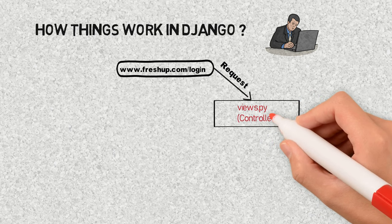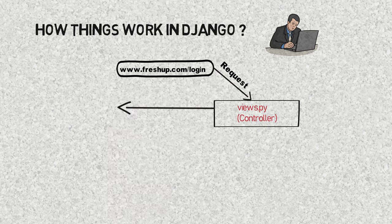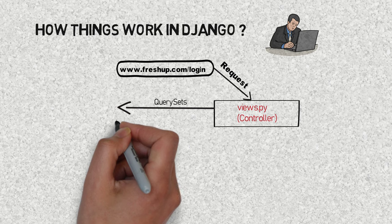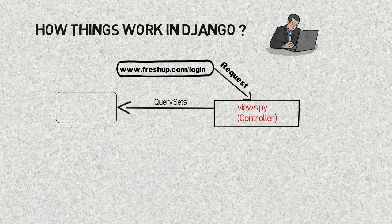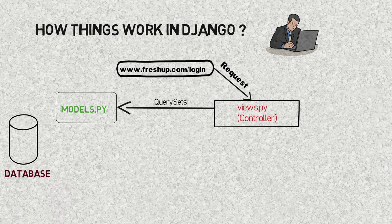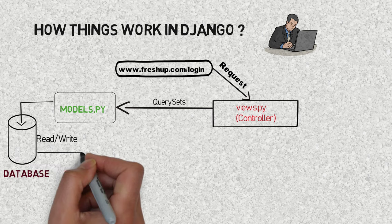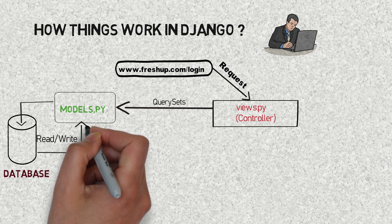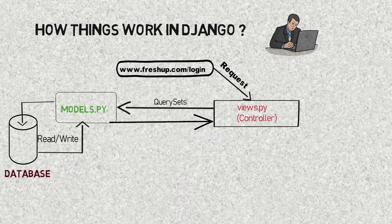When the views receive some requests, they pass some query sets to the models. Models actually help us to interact with the database directly. When models.py receives those query sets, it reads and writes some data to the database.